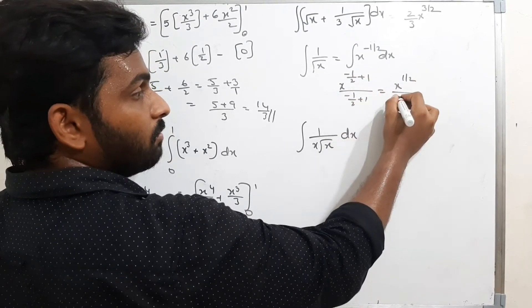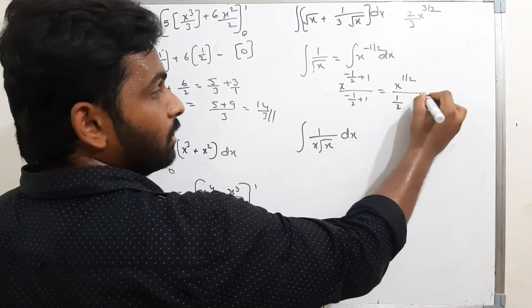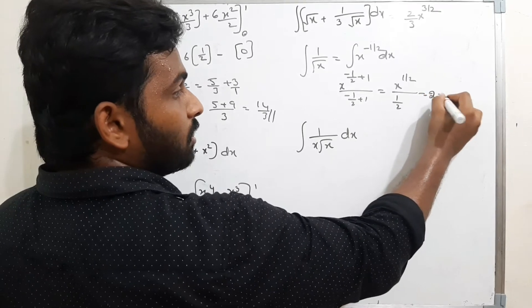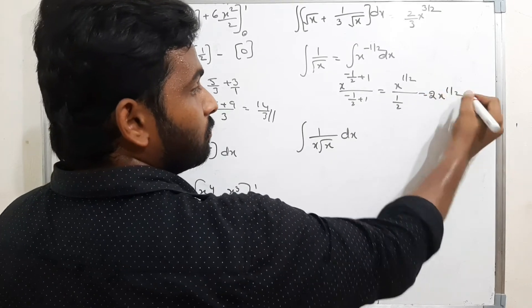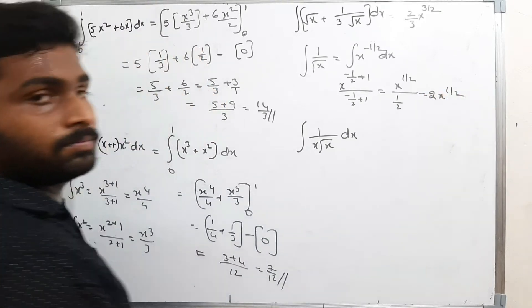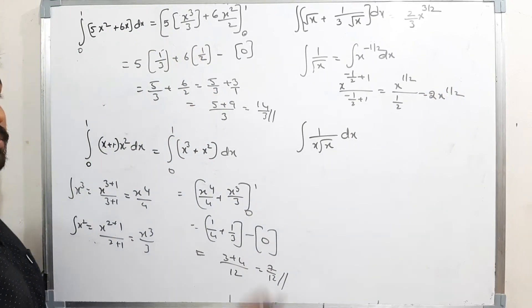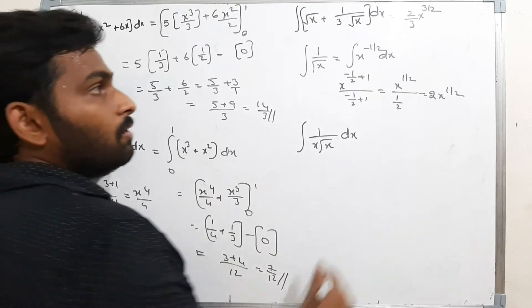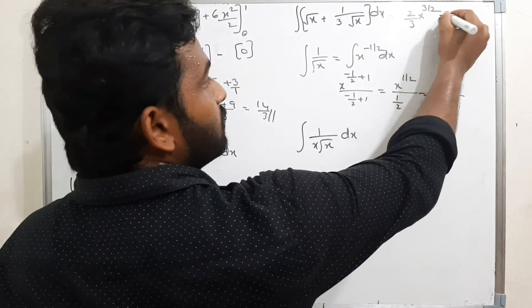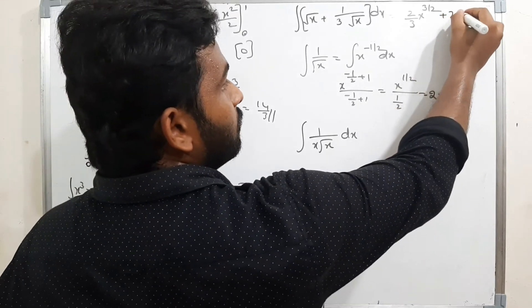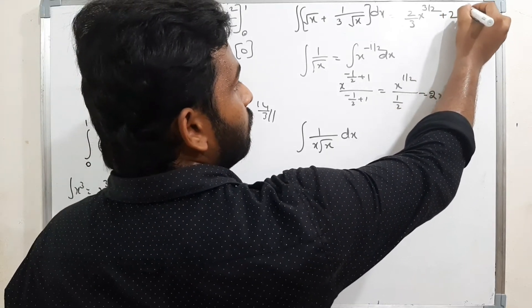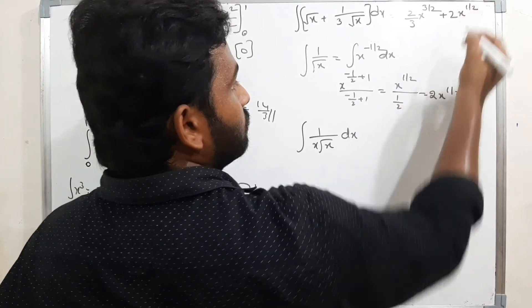That gives x^(1/2) divided by 1/2, which becomes 2x^(1/2). So the integration of 1/√x is 2x^(1/2), or 2√x.